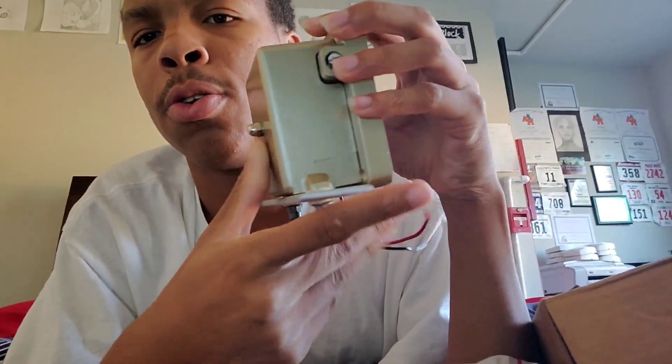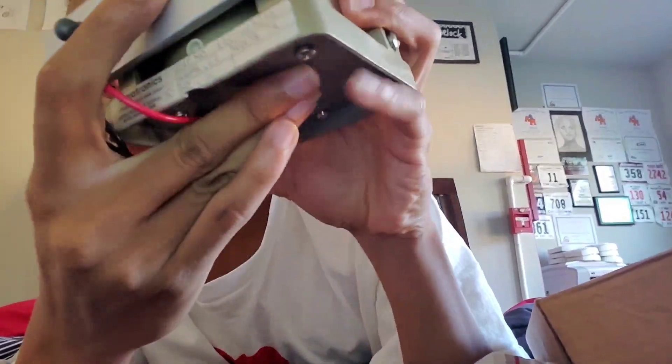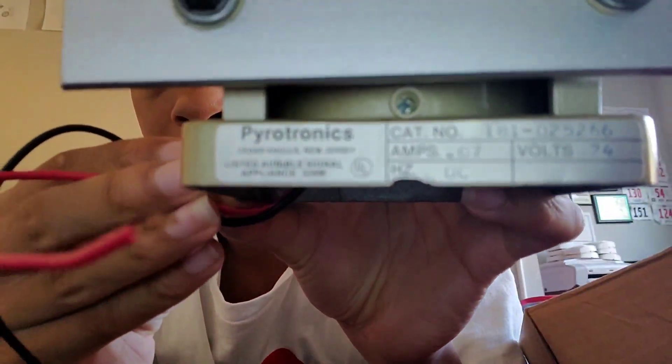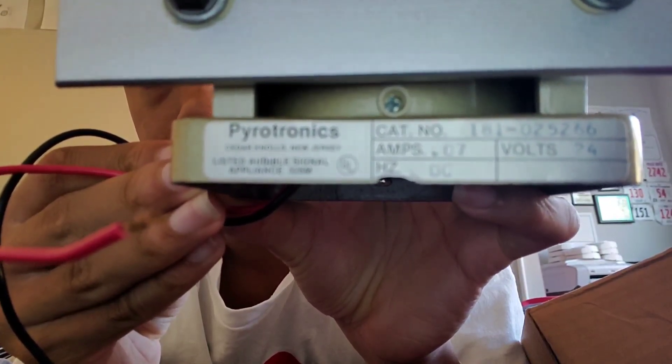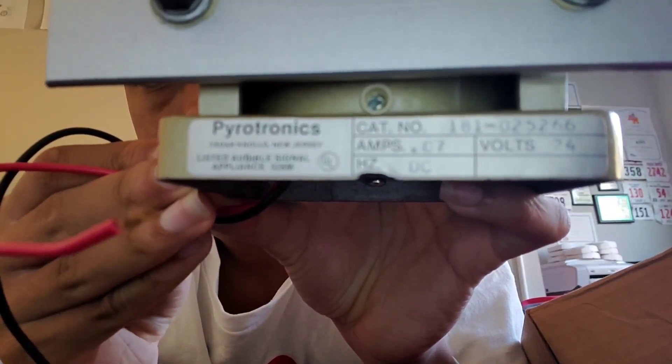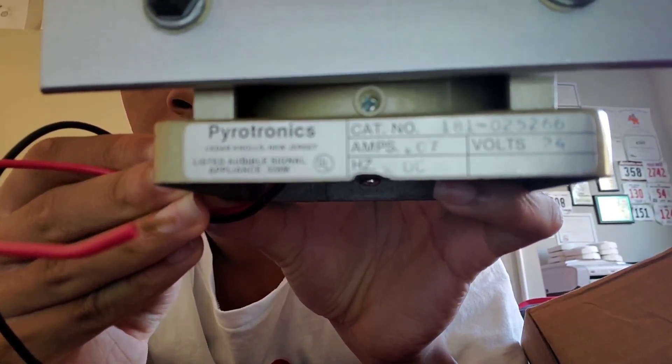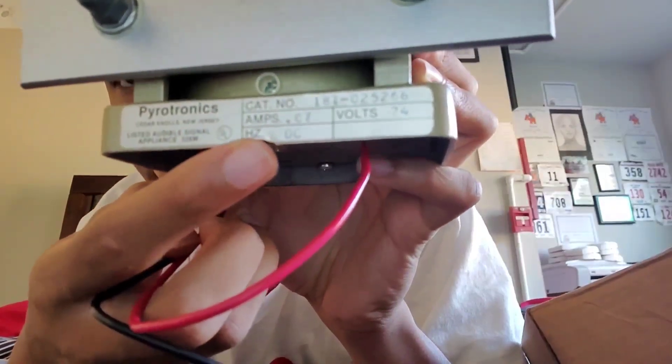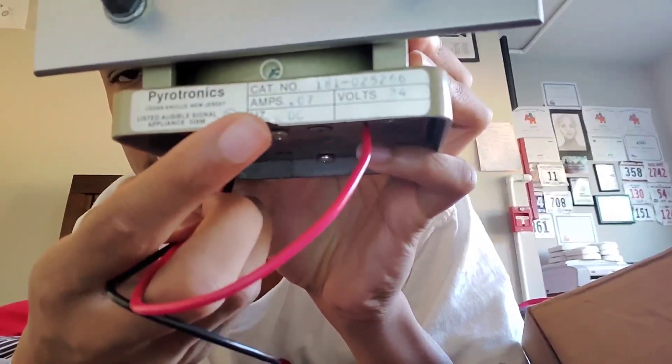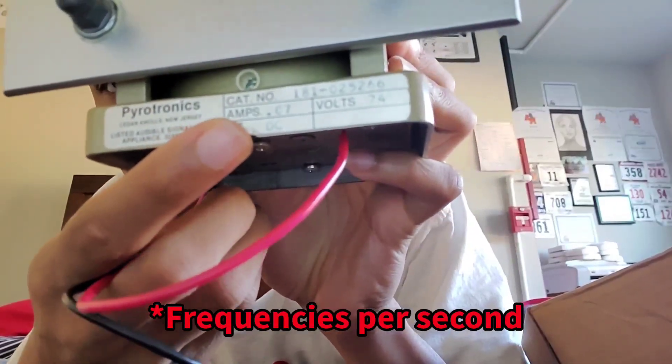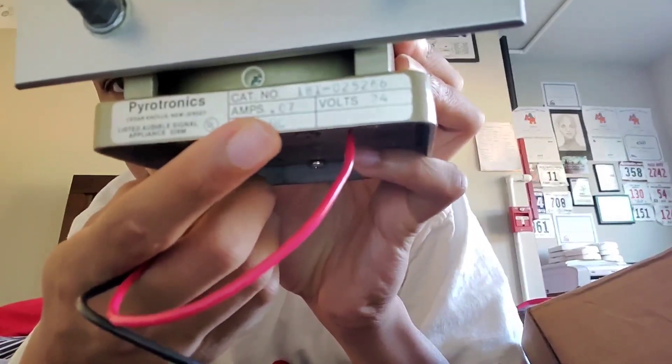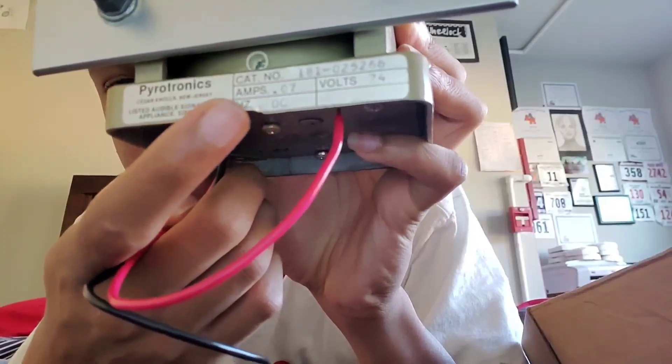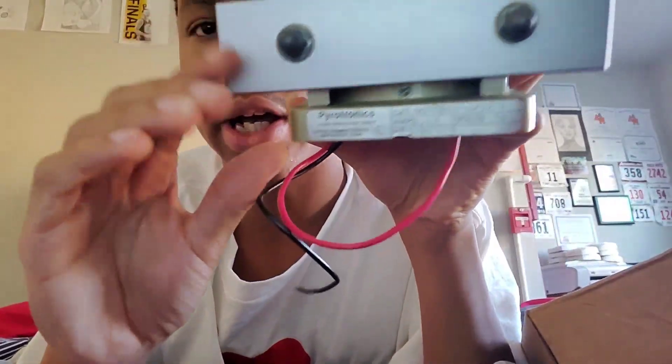I don't think I showed you the label, so here's what the label looks like. You have your catalog number up here. This pulls 70 milliamps, 24 volts of DC. Hertz is direct current, this is the frequency that hertz stands for. DC is direct current and AC is alternating current, which is a type of frequency.